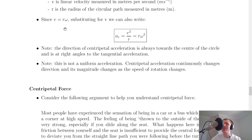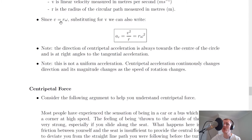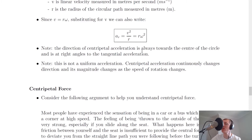If a question gives you the angular velocity omega instead of the linear velocity V, we can derive an expression using omega. Starting from AR equals V squared over R, and substituting V equals R omega, we get R squared omega squared over R, which simplifies to AR equals R omega squared. So the two important equations for centripetal acceleration are AR equals V squared over R, which also equals R omega squared.